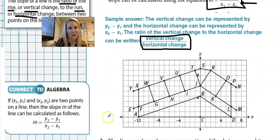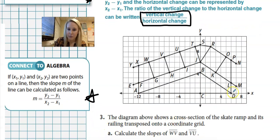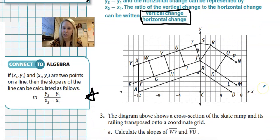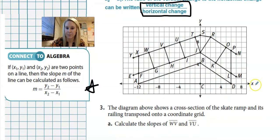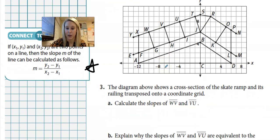Alright. So we're going to be using this formula today and rise over run. So the diagram above shows a cross section of the skate ramp and it's railing transposed onto a coordinate grid. So you've got a skate ramp and we're going to add some rails to do some cool tricks on. So here's my skate ramp over here, the A, B, and D. Here's the railing above it. We're going to calculate the slopes of WV and VU.